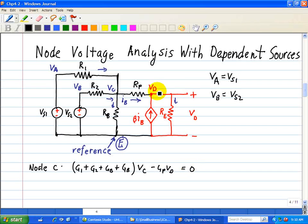Next we look at node D. At node D we have GP plus GE times VD, and the other end connected at VD is minus VCGP.